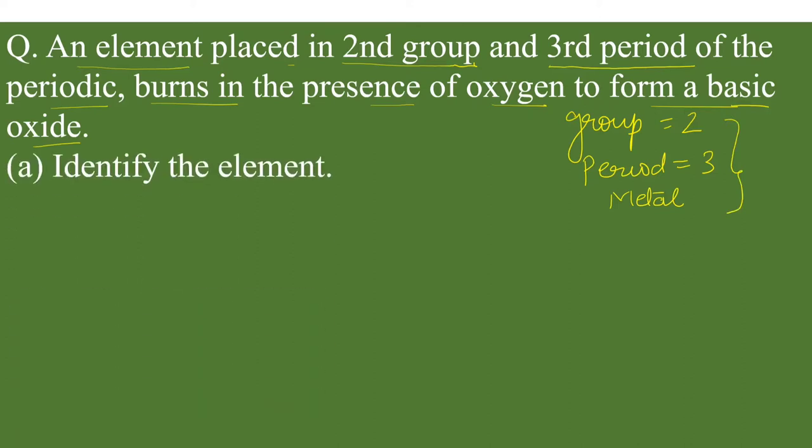Next is, identify the element. If group number is 2, we know that group number is equal to number of valence electrons, which is further equal to valency. This is the concept which you need to learn. Group number, if group number is 1 or 2, then it is equal to number of valence electrons, which is further equal to valency.